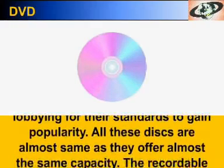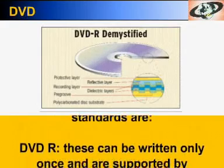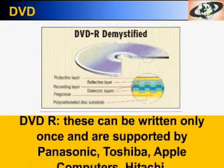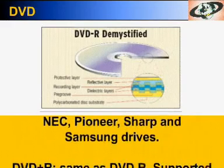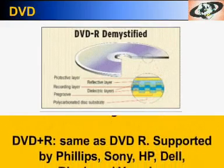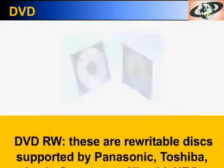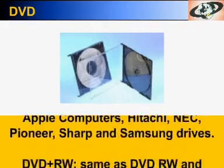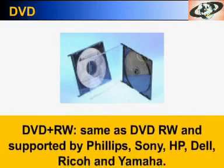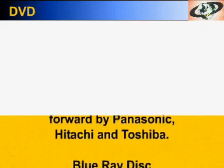All recordable DVD discs are almost the same as they offer almost the same capacity. The recordable standards include: DVD-R, which can be written only once and is supported by Panasonic, Toshiba, Apple Computers, NEC, Pioneer, Sharp and Samsung; DVD+R, a similar write-once format; DVD-RW, which are rewritable discs supported by Panasonic, Toshiba, Apple Computers, Hitachi, NEC, Pioneer, Sharp and Samsung; DVD+RW, supported by Philips, Sony, HP, Dell, Ricoh and Yamaha; and DVD-RAM, a rewritable standard put forward by Panasonic, Hitachi and Toshiba.